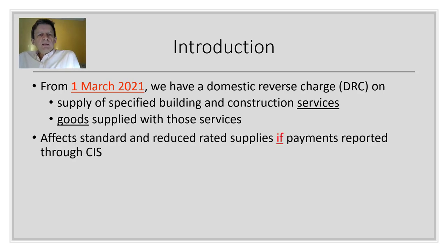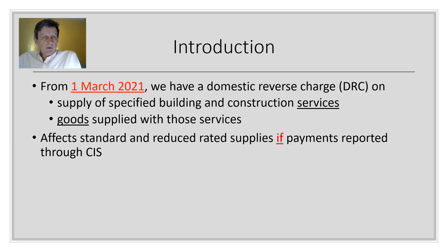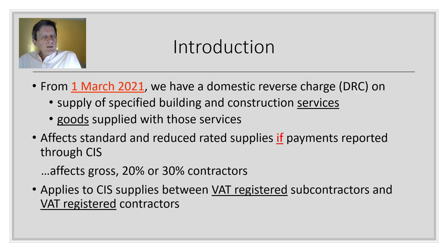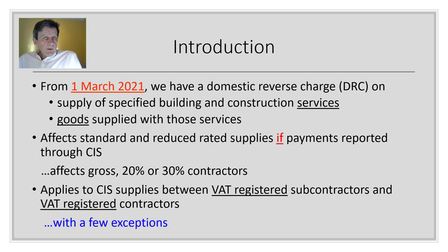These new rules affect standard and reduced rated supplies — that's 20% and 5% supplies — on the proviso that the payments are reported through the Construction Industry Scheme for direct tax purposes. It doesn't matter what type of contractor you are, whether you're a gross contractor, a 20% contractor, or a 30% contractor — if the supply is reportable through the CIS then you've met one of the two key conditions. The second condition is the supply must be between VAT-registered parties, with a few exceptions, most importantly end users.